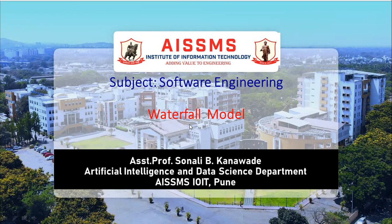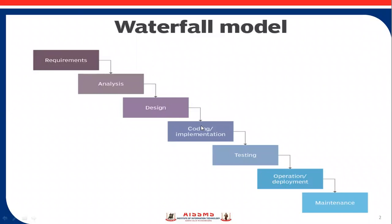So next is the waterfall model. The waterfall model has several stages: first is the requirement, then analysis, then design, coding, then testing, then operation or deployment and maintenance. The waterfall model is the basic of the software life cycle. The software life cycle has two types: software development life cycle and software testing life cycle. The waterfall model is basically included in the software development life cycle.